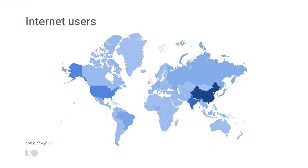When thinking about new users for your experience and product, you really need to think globally. Looking at internet users in 2016, the darker the country on the map, the more internet users. The United States has about 286 million internet users, but India has almost twice that — around 462 million — and China has 721 million, almost as much as both the US and India combined.